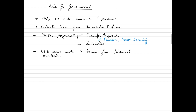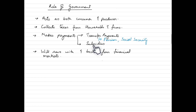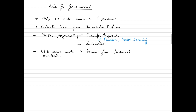The second role of the government is to collect taxes from households and firms to finance its spending in the economy. The third role involves making transfer payments to households in the form of pensions, social security, unemployment allowances, and healthcare, and providing subsidies to firms to increase their productivity. Finally, the government saves with financial markets and borrows from them when it faces a budget deficit.